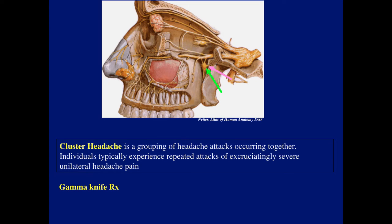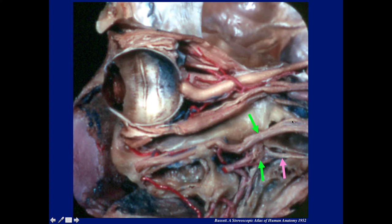Why is it important to identify the pterygopalatine fossa? There's a condition called cluster headache — a grouping of headache attacks occurring together where individuals experience repeated attacks of excruciatingly severe unilateral headache pain. One treatment used is gamma knife treatment, but to identify the region of the ganglion you follow the vidian nerve anteriorly. Here's a beautiful anatomic dissection from the 1930s showing a sagittal dissection of the orbit and floor of the orbit — here we see the maxillary nerve, the vidian nerve, and this is the ganglion.